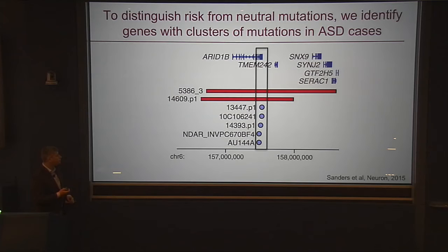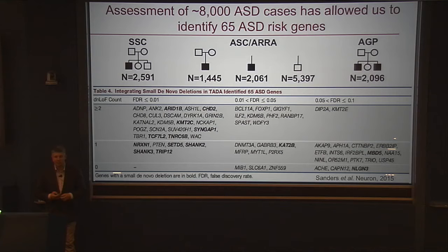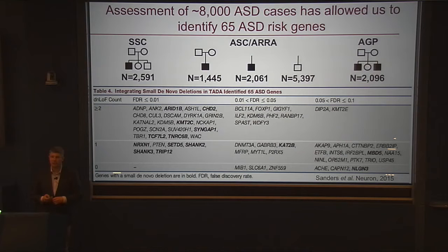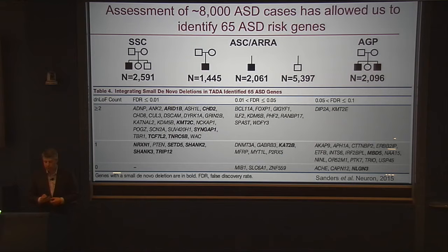When we combine cases together — now looking at a population of 8,000 — we can start to find lots of genes. At the bottom is a list of 65 genes, all of which we have greater than 90% confidence are associated with autism. For the box on the far left, we have greater than 99% confidence. This creates an amazing substrate for trying to work out the biology. If we could understand what these genes do and why they result in the same effect, we would have a working understanding of how autism occurs.